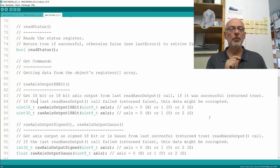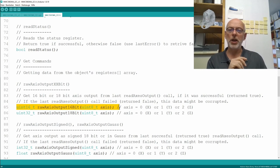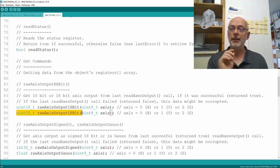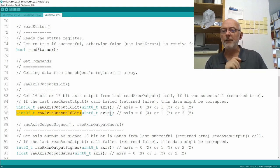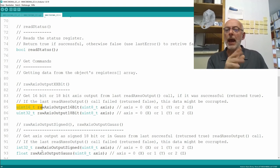We already implemented in the first details video these two methods here, which return us the raw axis output for each axis in 16-bit and in 32-bit unsigned. But now we know it's really a plus-minus range with a 0 in the middle. So I have here two new methods, a raw axis output signed, which returns us a signed 32-bit integer, and a raw axis output in Gauss, which returns a float for each axis.